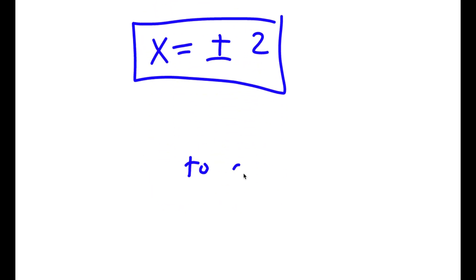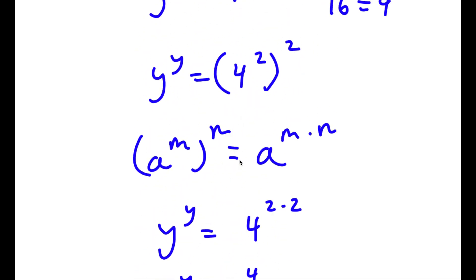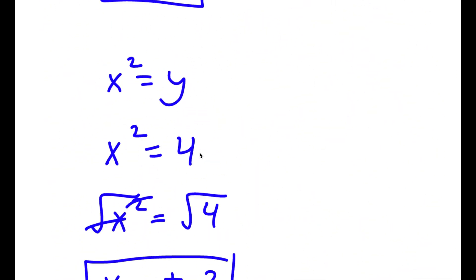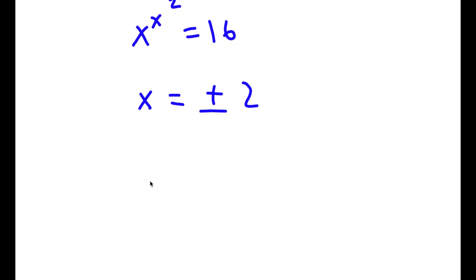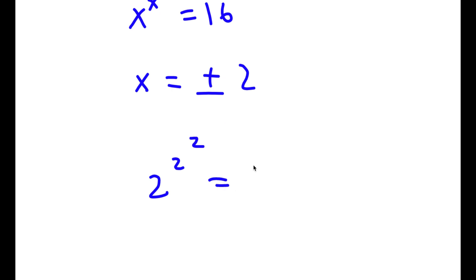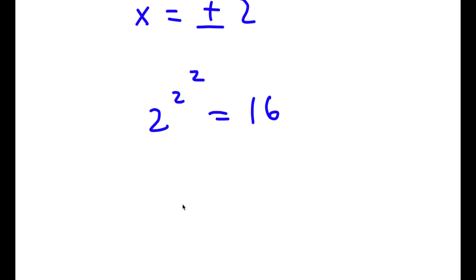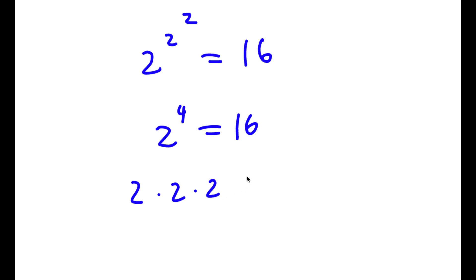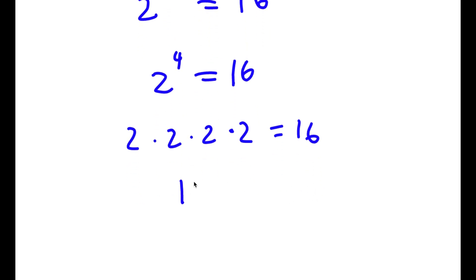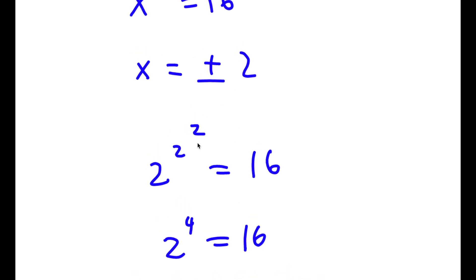So now to check — my original equation was x to the power of x to the power of 2 is equal to 16. We know that x is equal to positive or negative 2. Let's first start with x equal to positive 2. I have 2 to the power of 2 to the power of 2 is equal to 16. Now 2 to the power of 2 is 4, so I have 2 to the power of 4 is equal to 16. And 2 to the power of 4 is 2 times 2 times 2 times 2, which equals 16. So 16 equals 16 — our solution x equals positive 2 is correct.